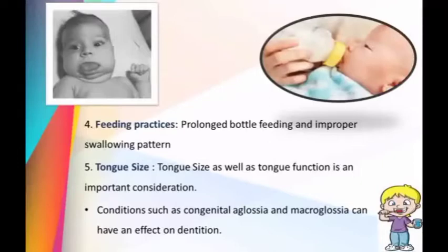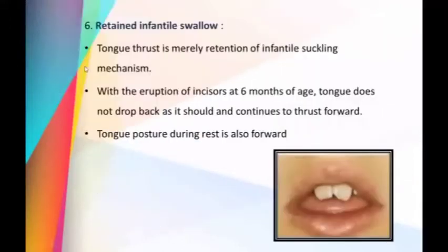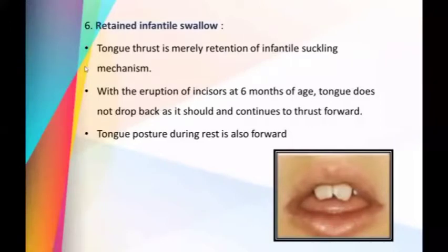Regarding retention of infantile swallow, tongue thrust is merely retention of the infantile sucking mechanism. With the eruption of the incisors at 6 months of age, the tongue does not drop back as it should, and continues to thrust forward during swallowing, with tongue posture at rest also being incorrect.